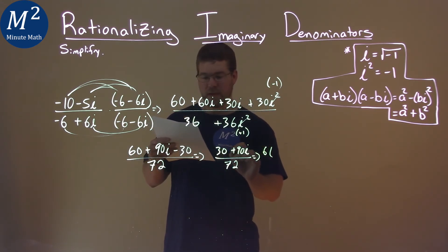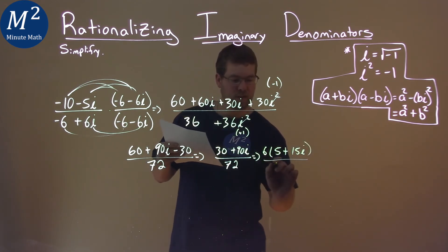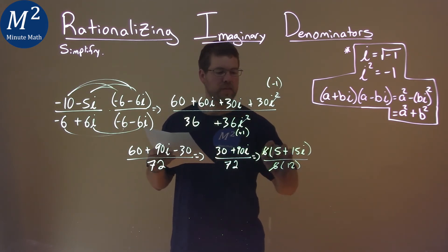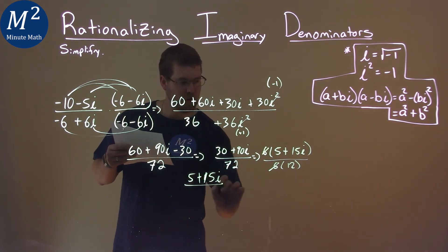We're left with 5 plus 15i, and 6 out of the denominator leaves us with 12. We can cancel these 6s out, and we're left with 5 plus 15i over 12.